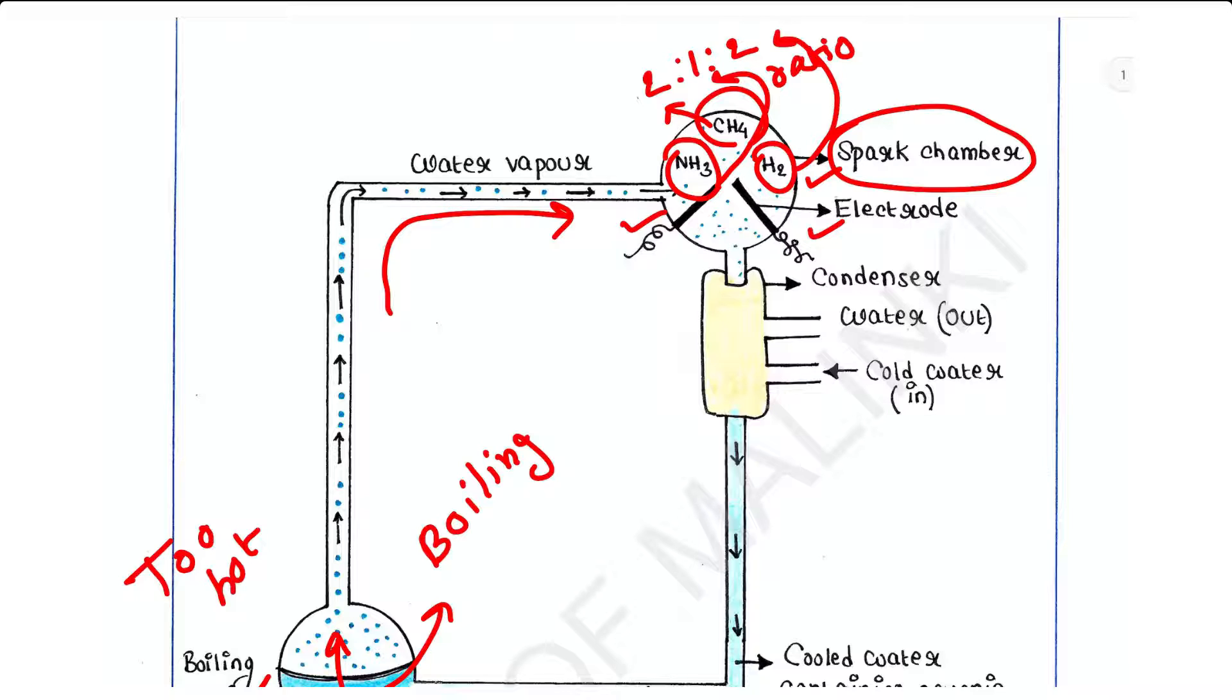In this system, they have added a condenser here. So what does it actually do? It wraps this tube. This condenser basically wraps this tube like a jacket. Now through this tube, cold water is allowed to enter, that makes this part cool.